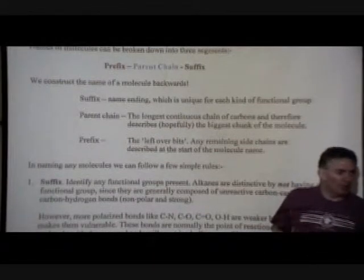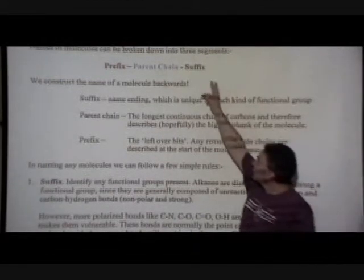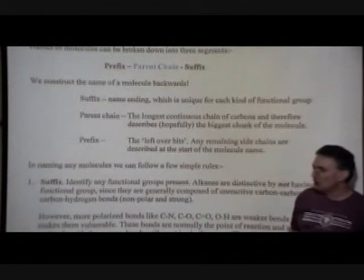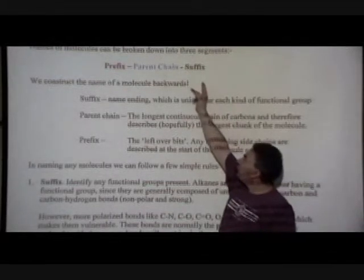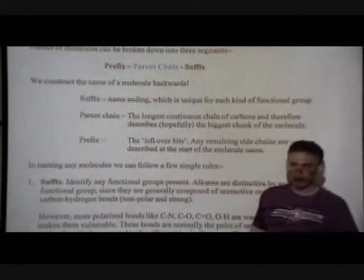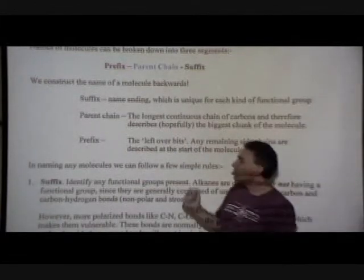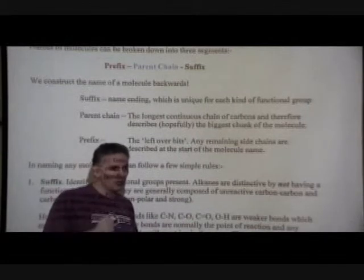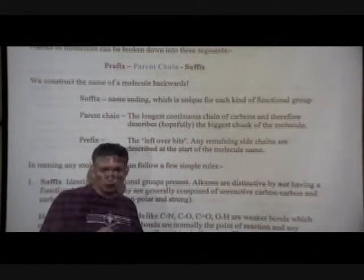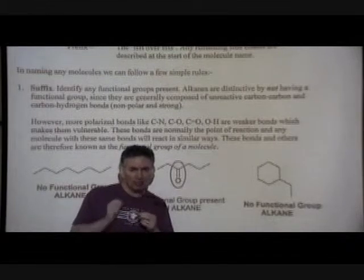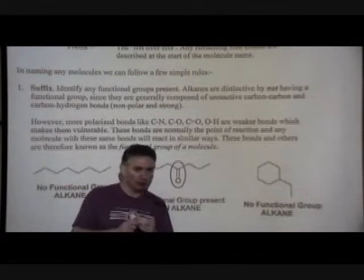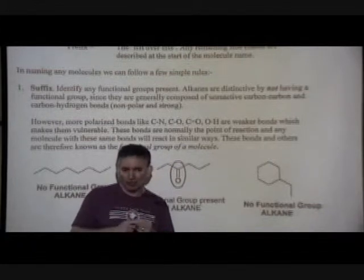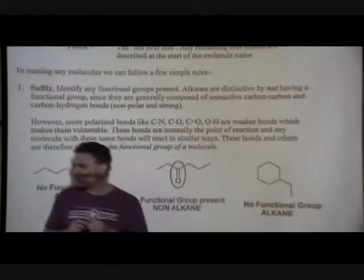As we build up the name of the molecule, we're actually going to start backwards. We start from the ground and work our way up. For the suffix of the molecule, we're looking at the functional group - the name ending. The name ending will be specific to the kind of functional group. We only have to worry about one kind of functional group in this chapter: the alkanes.